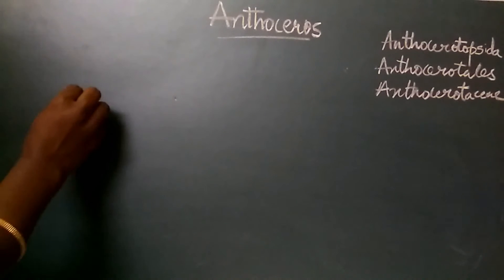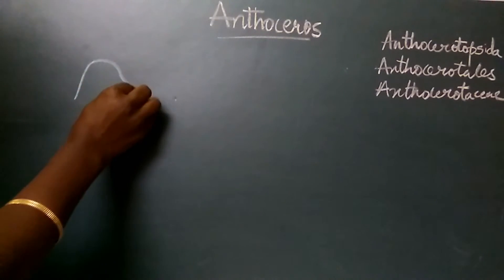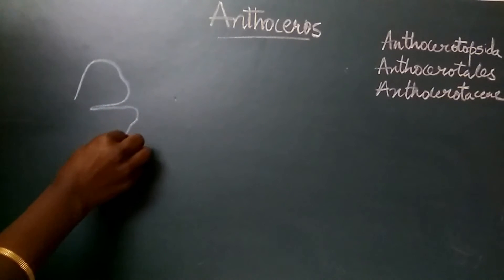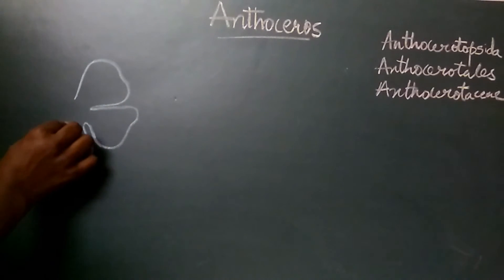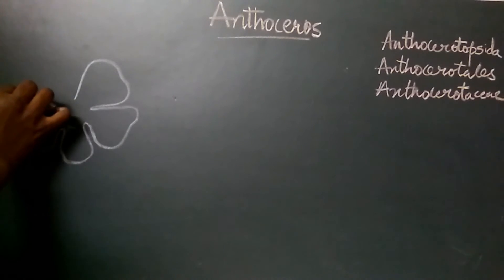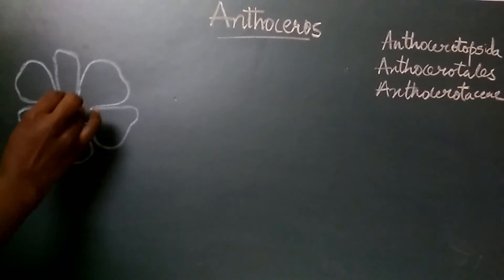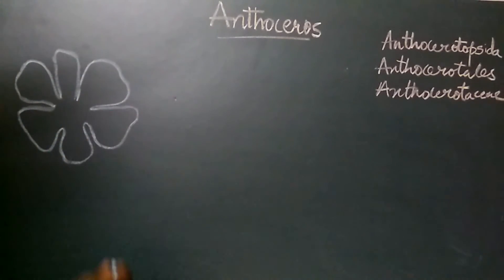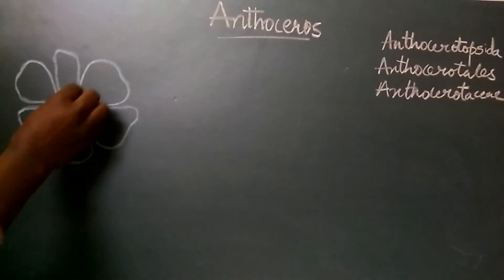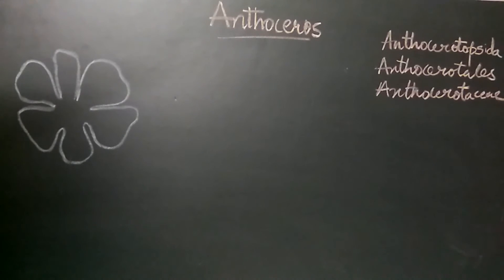We see the structure of Anthoceros thallus. It is suborbicular and lobed structure which is dorsiventrally flattened, multicellular in the center and towards the periphery it is few cells in thickness. The central region appears thick. The dorsal surface is dark green in color and the thallus is prostrate in nature.